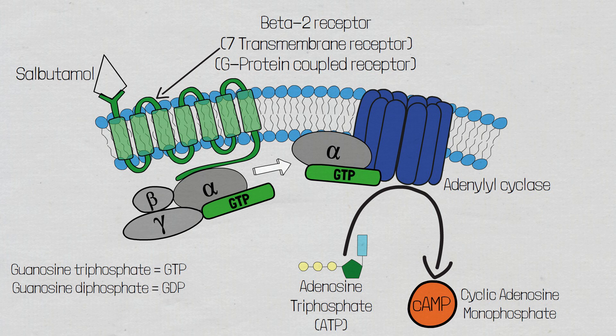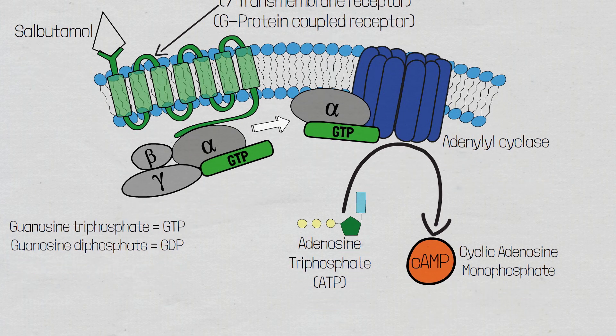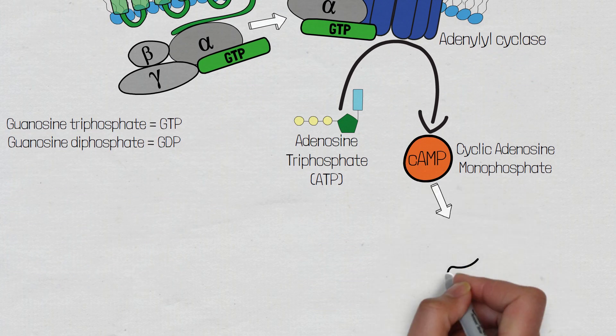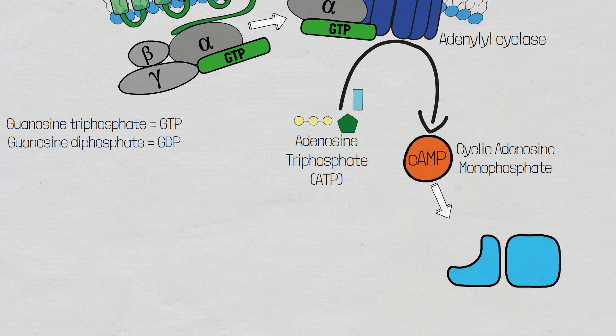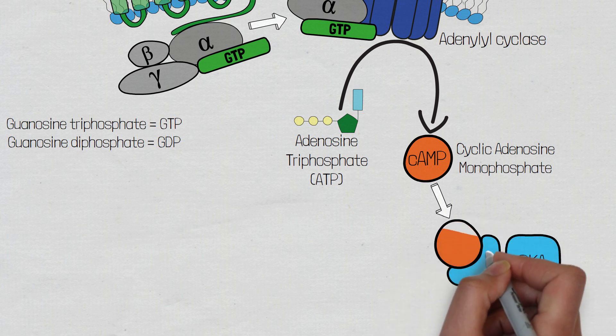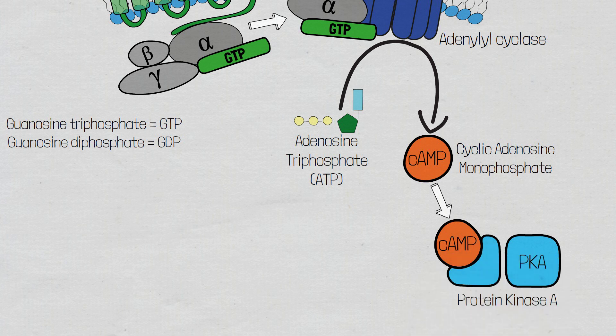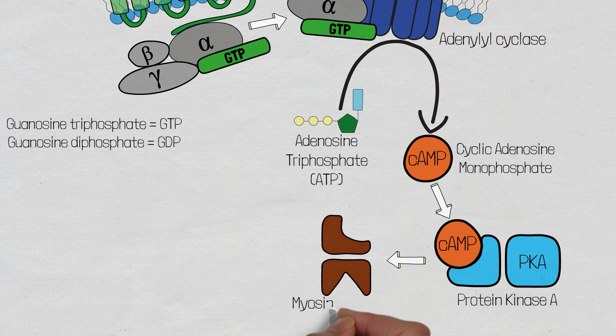This cyclic AMP will now bring about a response from the cell, making cyclic AMP a second messenger. Cyclic AMP will then act upon protein kinase A, and the activity of protein kinase A is directly dependent on the levels of cyclic AMP within the cell. A kinase is an enzyme that adds a phosphate group to another molecule, known as phosphorylation. In this intracellular process, protein kinase A is going to phosphorylate — add a phosphate group — onto the myosin light chain kinase.